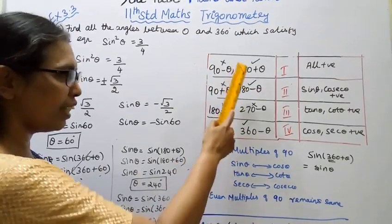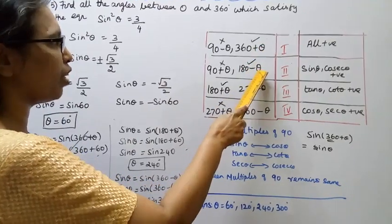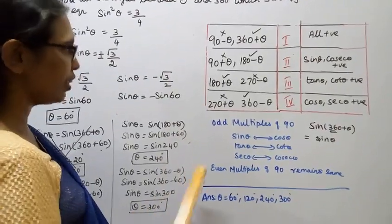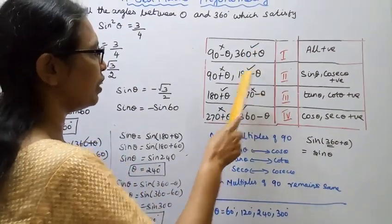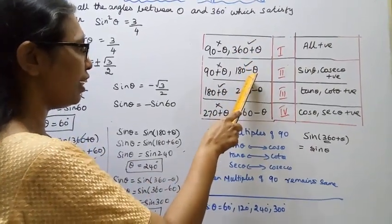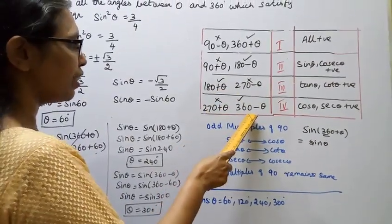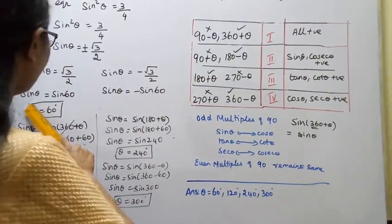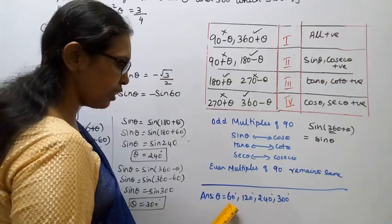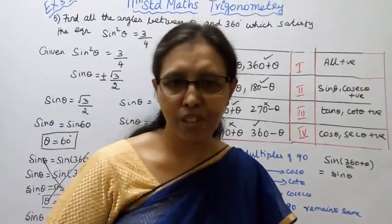So the final answers are: theta equal to 60 degrees, 120 degrees, 240 degrees, and 300 degrees. These are all the angles between 0 and 360 that satisfy sin squared theta equal to 3 by 4.